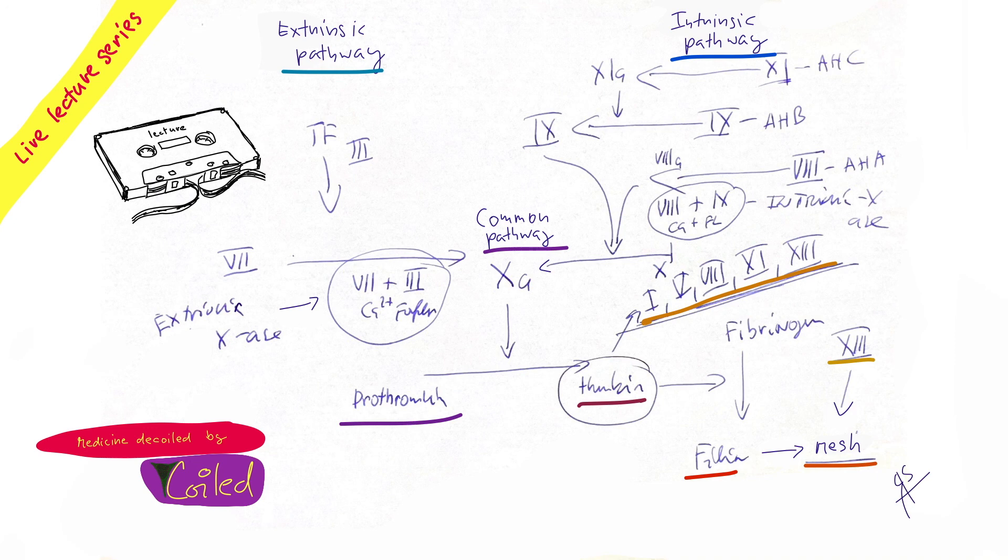So there are the extrinsic and intrinsic pathways. This one is simple. Tissue factor is the cofactor. Which enzyme? The seventh one. So together, seven plus three plus calcium and phospholipids form, now we call it extrinsic tenase. This is extrinsic tenase, XA.